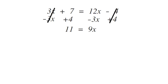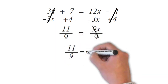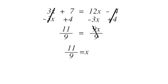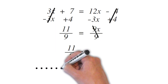Now all we need to do is divide both sides by 9 and get 11 over 9 equals 9x over 9. Cancel out the 9s and you get 11 over 9 equals x. And that's it.